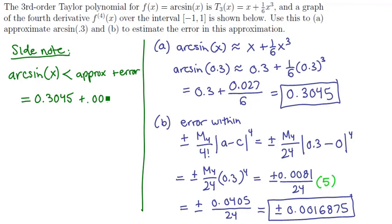The error was 0.0016875. And so if we add these two values together, we're going to get 0.3061875. That's the largest arcsin(0.3) could possibly be.